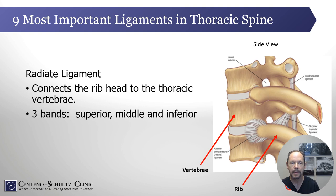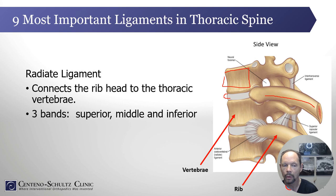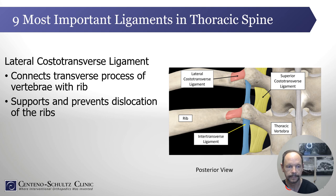So what are the nine most important ligaments in the thoracic spine? The first is the radiate ligament as depicted here. These are the vertebral bodies and in between them is the cushion otherwise known as the disc. What's unique about the thoracic spine is the ribs — they articulate at two different points: the vertebral body as well as the transverse process. The radiate ligament basically holds the head of the rib to the thoracic vertebrae, a very important ligament.